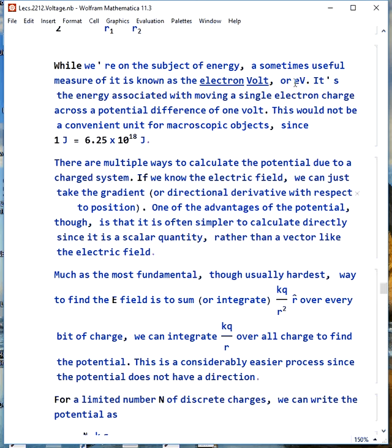We take the charge on the electron, 1.6 times 10 to the negative 19 coulombs, multiply it by a volt, which is 1 joule per coulomb, and we get that 1 eV is 1.6 times 10 to the negative 19 joules. We could invert that, and we would get 1 joule is 6.25 times 10 to the 18 eV.